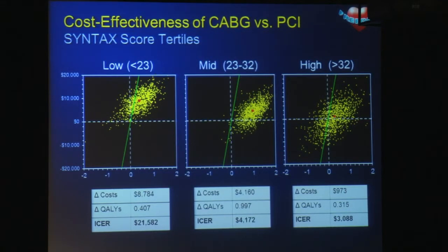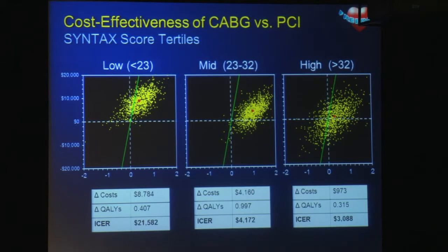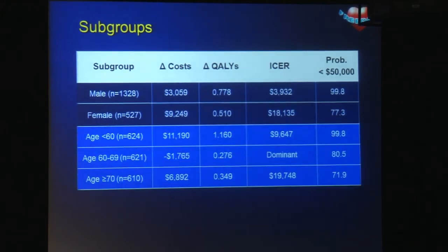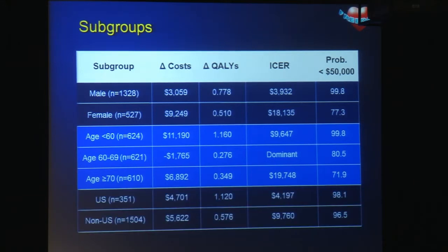We also carried out subgroup analyses based on syntax score, and they all yielded cost-effectiveness ratios that were favorable. Even at the low syntax score, while the incremental cost of CABG tended to be higher, we obtained an estimated ICER of roughly $22,000 per life year gained. For the other syntax score tertiles, the estimates were highly favorable. We carried out several other subgroup analyses — including stratifying patients according to sex, age, and U.S. versus non-U.S. enrollment — and all of the results were highly favorable to CABG.